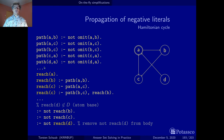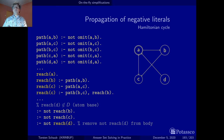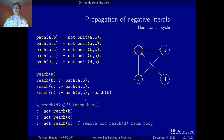Once we have seen all ground instances with a head of the path predicate, we can use all instances of predicate path not in the atom base to simplify negative body literals. This is now happening with the reach predicate. In the same way as with the path predicate, we know at this point all the rules that have atoms with predicate reach in their head.